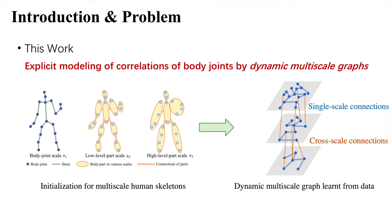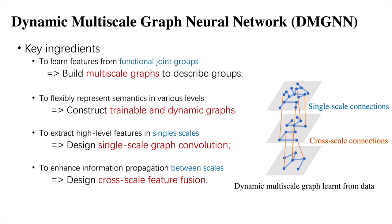We initialize the human bodies with human prior and train dynamic multiscale graphs on it from the motion data. With the multiscale graphs for body representation learning, we propose our Dynamic Multiscale Graph Neural Network, DMGNN, which includes several key ingredients: we build multiscale graphs to learn features from functional joint groups, we construct trainable and dynamic graphs to flexibly represent semantics at various levels, we design single-scale graph convolution to extract high-level features in single scales, and we design cross-scale graphs to enhance information propagation between scales.